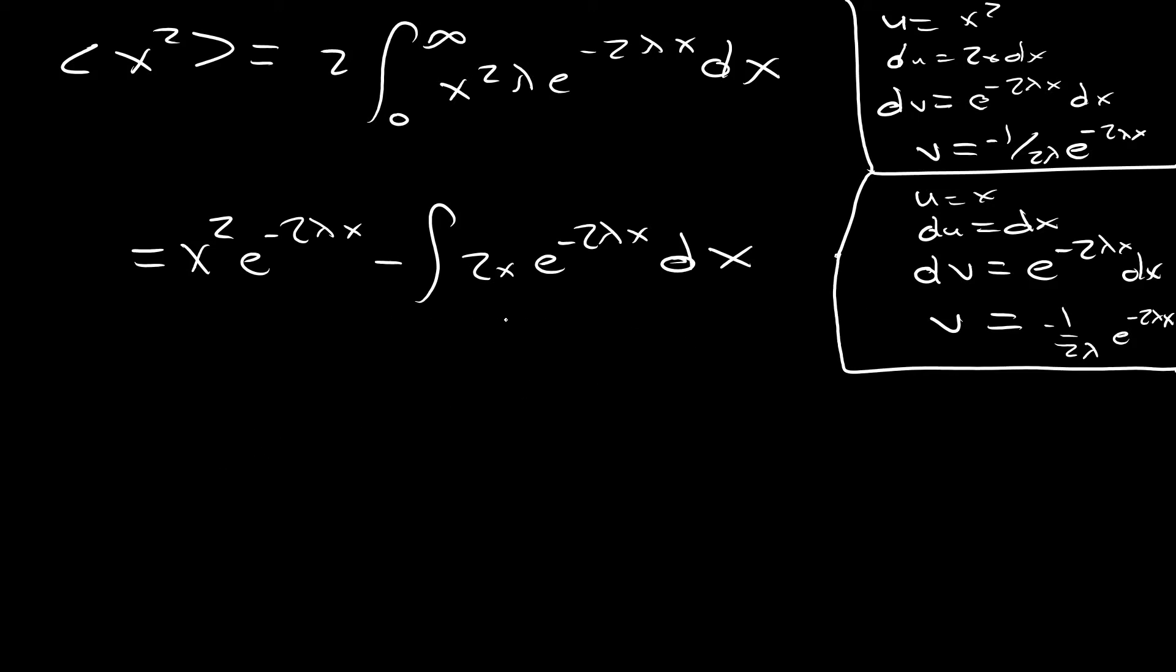All right, and then we can do that to evaluate this guy. And then we're going to end up getting the following. All right, now we just have this one last integral that we have to evaluate. This is a fairly straightforward integral. So let's evaluate that. And let's remember that all of this is being evaluated on the bounds 0 to infinity.